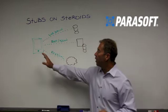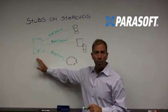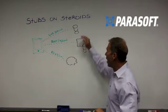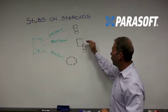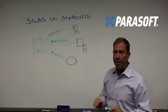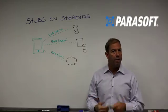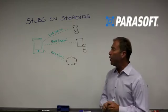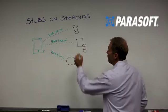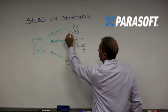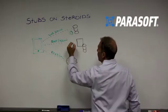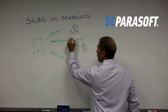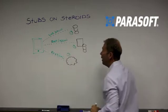So when I'm evolving the code associated with my mobile application, I know I have to integrate with multiple dependencies that are evolving at different speeds, different paces. What if I could actually simulate the behavior of these endpoints with service virtualization?